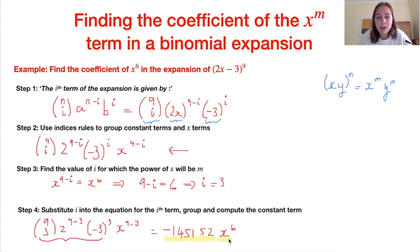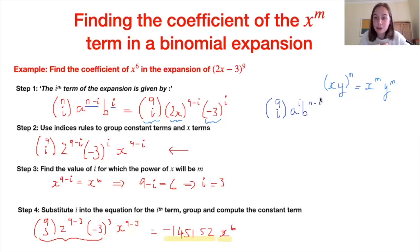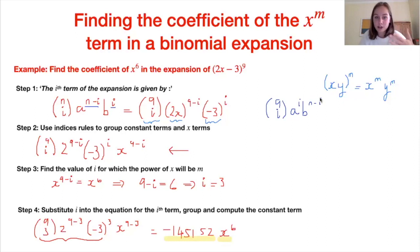One important note: the coefficients of the binomial expansion are symmetric. That means I could have solved this in terms of increasing powers of a and decreasing powers of b. The ith term could be written as 9 choose i × (2x)^i × (−3)^(9−i). Working through the same steps, we would find i = 6 and arrive at the same answer. The symmetry means it doesn't matter which direction we work.